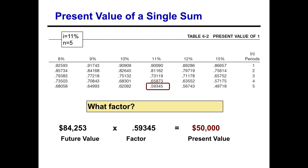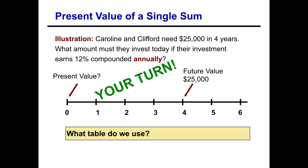Now you try one. Caroline and Clifford need to have $25,000 in four years. The question is: how much do they need to invest today at twelve percent compounded annually to have that $25,000 in four years? Pause your player and give this one a shot. Remember your questions: is it a present value or future value? Is it a lump sum or an annuity? That's going to help you locate which table you need to use.